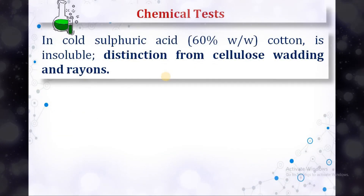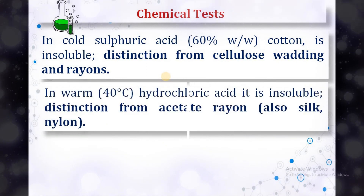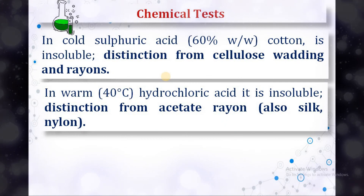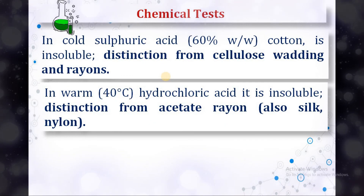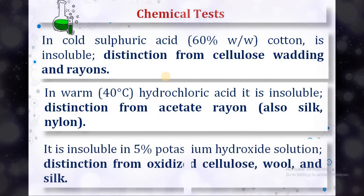Cotton does not give a red stain with phloroglucinol and hydrochloric acid. In cold sulfuric acid, cotton is insoluble. In warm hydrochloric acid at 40°C, it is also insoluble. It is likewise insoluble in 5% potassium hydroxide solution.